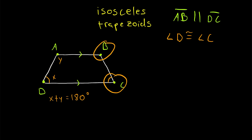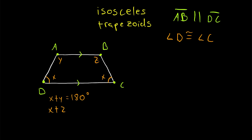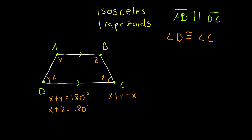We can use that same logic with angles C and B. Since angle D is congruent to angle C, angle C also has a measure of x. Let's say that angle B has a measure of z, and we're arguing that y equals z. By the same transversal argument, angles C and B are consecutive interior angles, so x plus z equals 180 degrees. Since x plus y and x plus z both equal 180 degrees, we have x plus y equals x plus z, and subtracting x from both sides gives us y equals z. Thus, base angles A and B are congruent to each other.